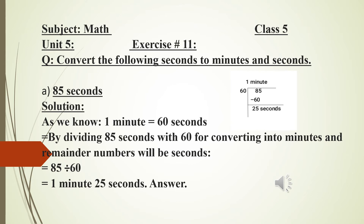Look at part A: 85 seconds. As we know, 1 minute is equal to 60 seconds. By dividing 85 by 60, the quotient gives the minutes and the remainder gives the seconds. 60 goes into 85 once, giving 60. 85 minus 60 leaves 25 seconds as the remainder. So the answer is 1 minute and 25 seconds.